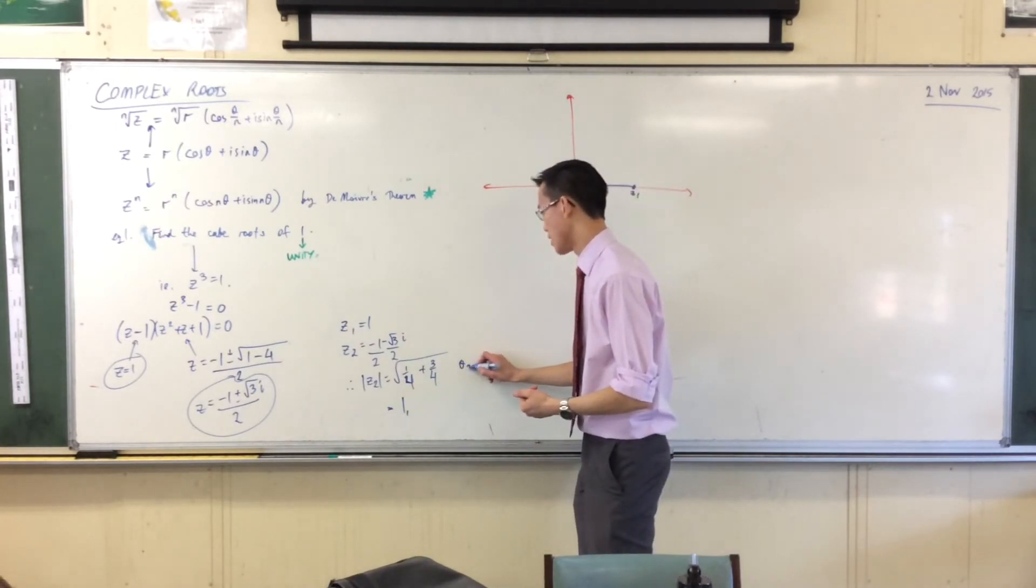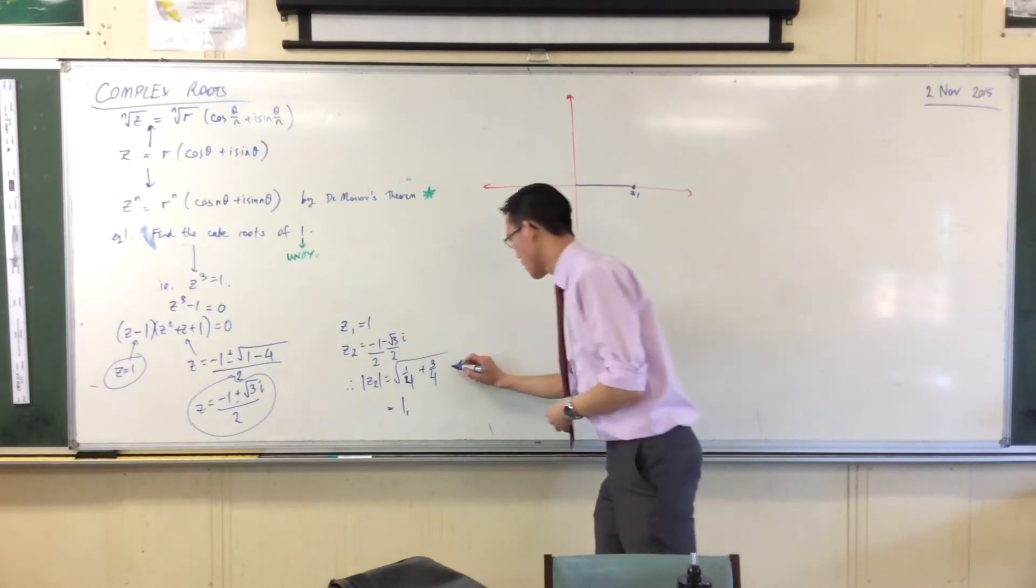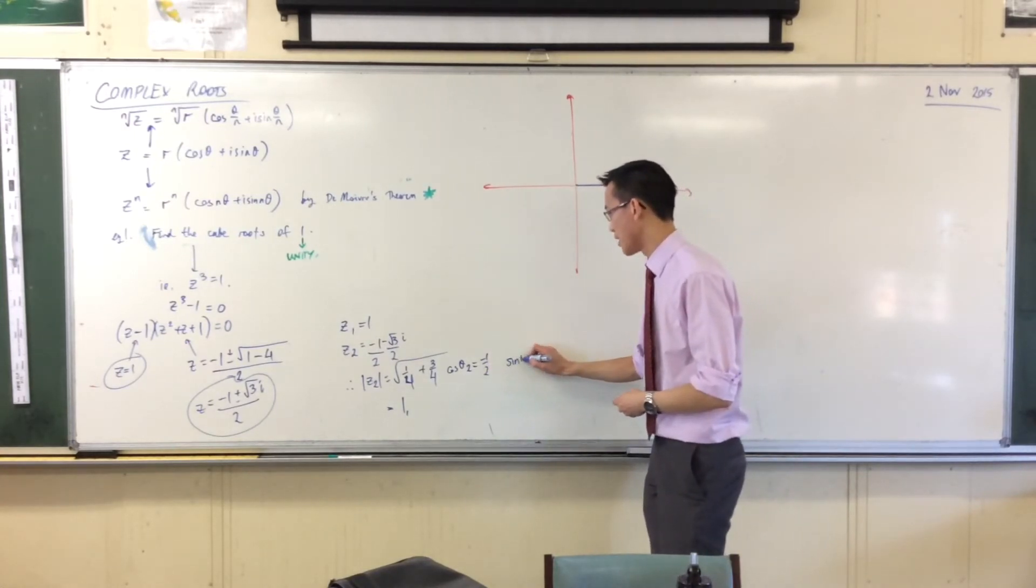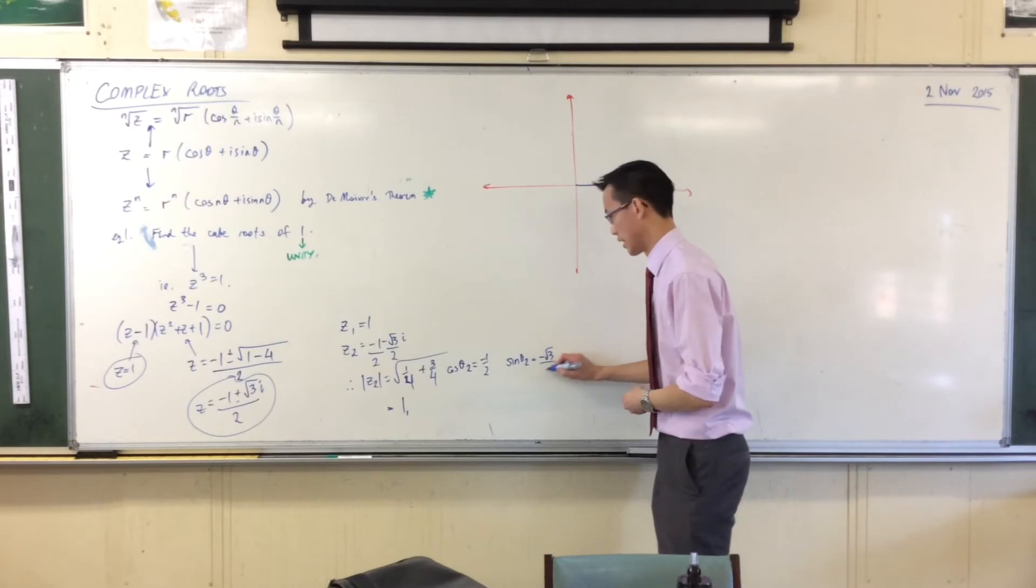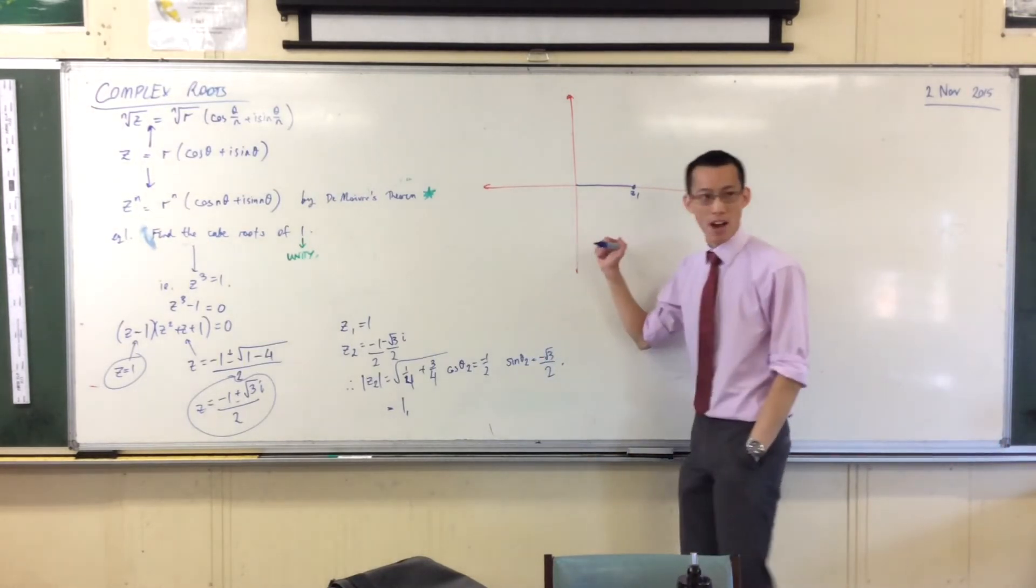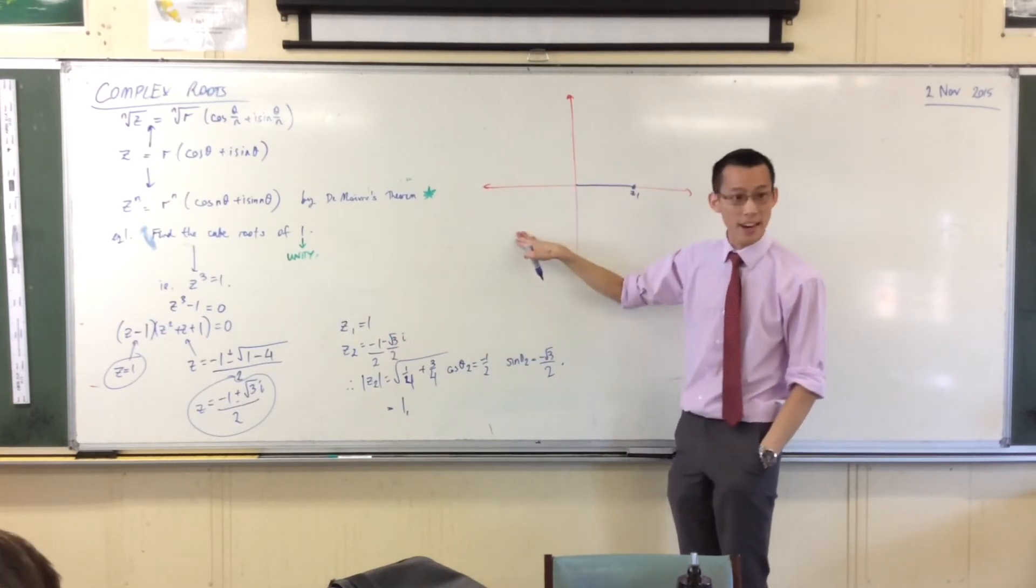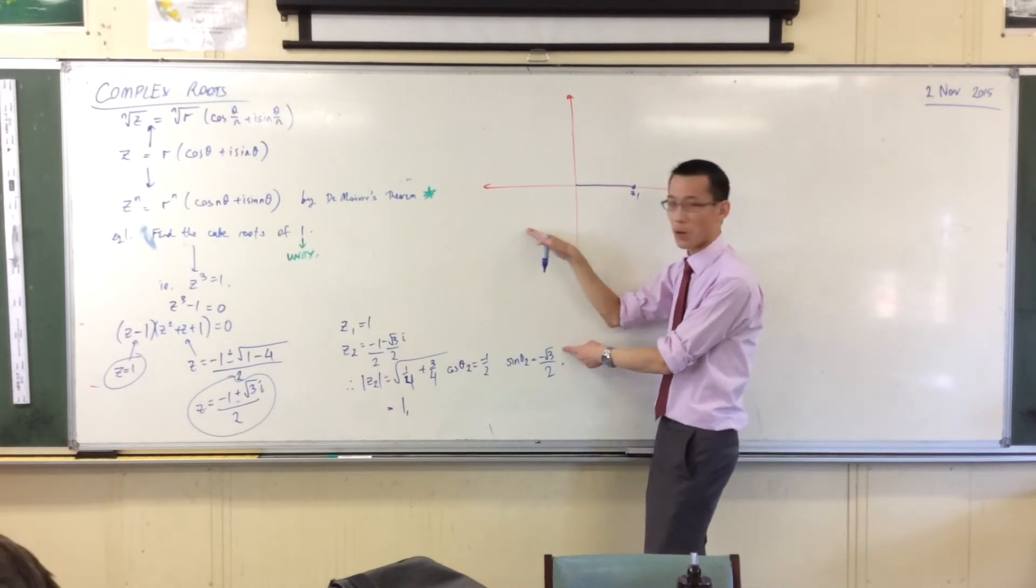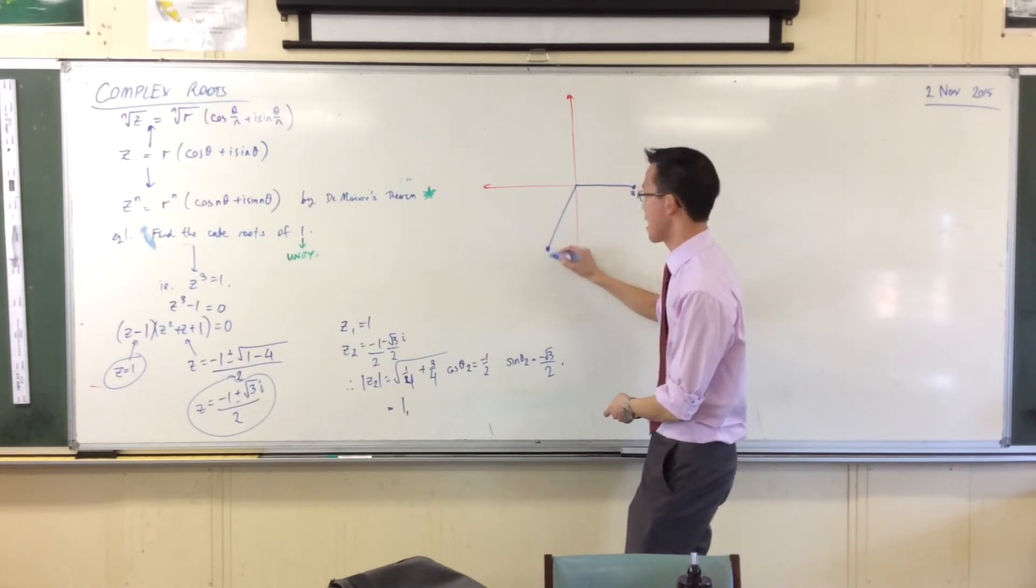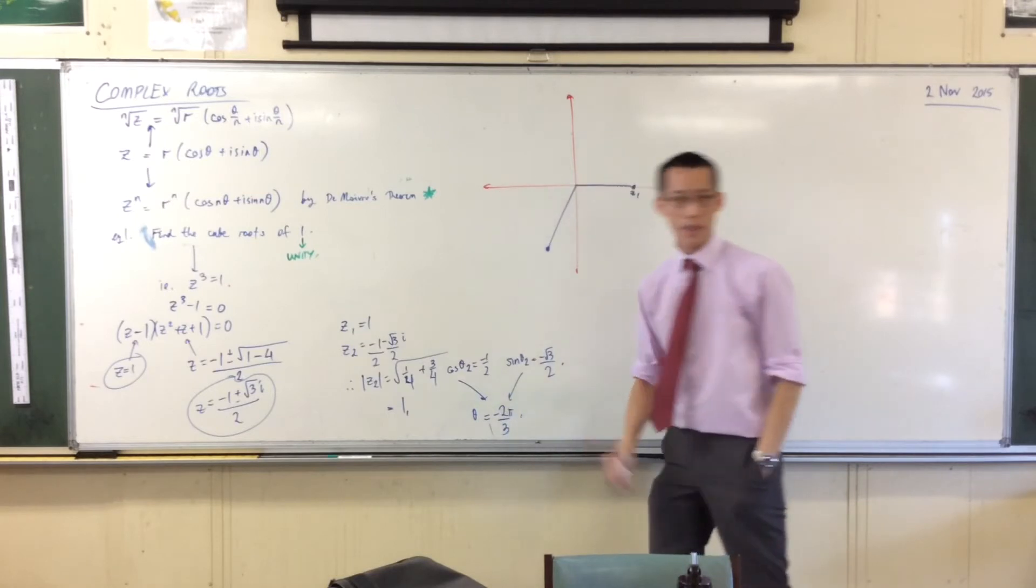What about the argument? Let's call it Theta 2. You want your real and imaginary parts. Cos of Theta 2 is going to be minus 1 on 2, and sine of Theta 2 is minus root 3 on 2. Can anyone tell me what the answer is? It's in the third quadrant. Minus 1 half minus root 3 on 2, so it's down here. What angle is going to correspond to that? Minus 2 pi on 3, which I can tell is about there. So Theta equals minus 2 pi on 3. That's my principal argument.